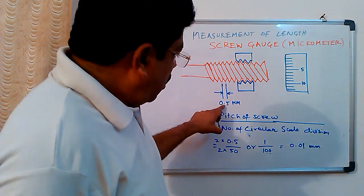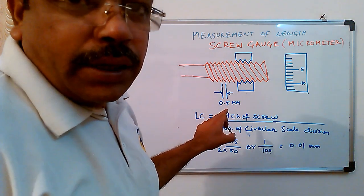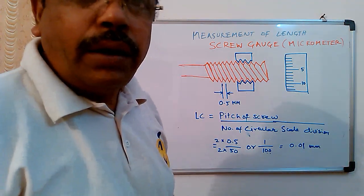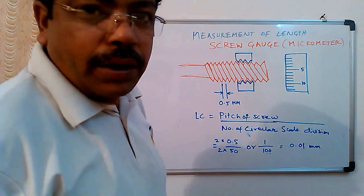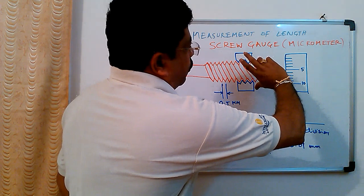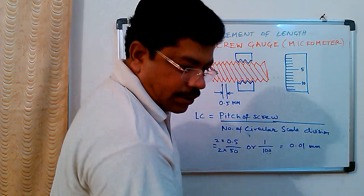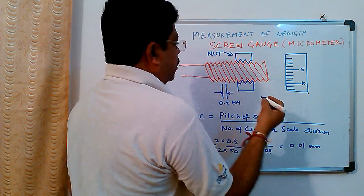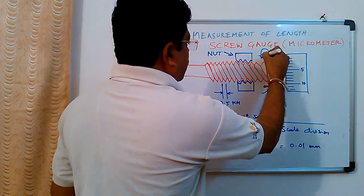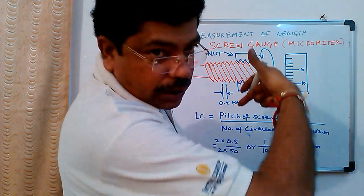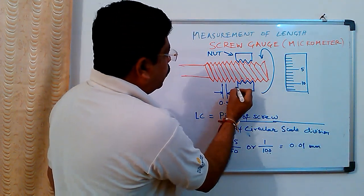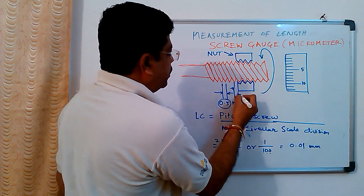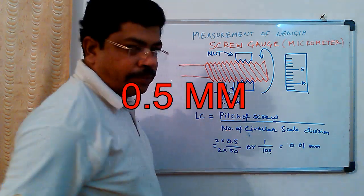If the pitch is around 0.5 mm, let us say, or it can be 1 mm - it depends whatever pitch you want to maintain. Let us say if it is 0.5 mm here, then if you turn this nut, if you rotate this nut by one turn, the distance moved by this nut will be 0.5 mm. This gap again is 0.5 mm.